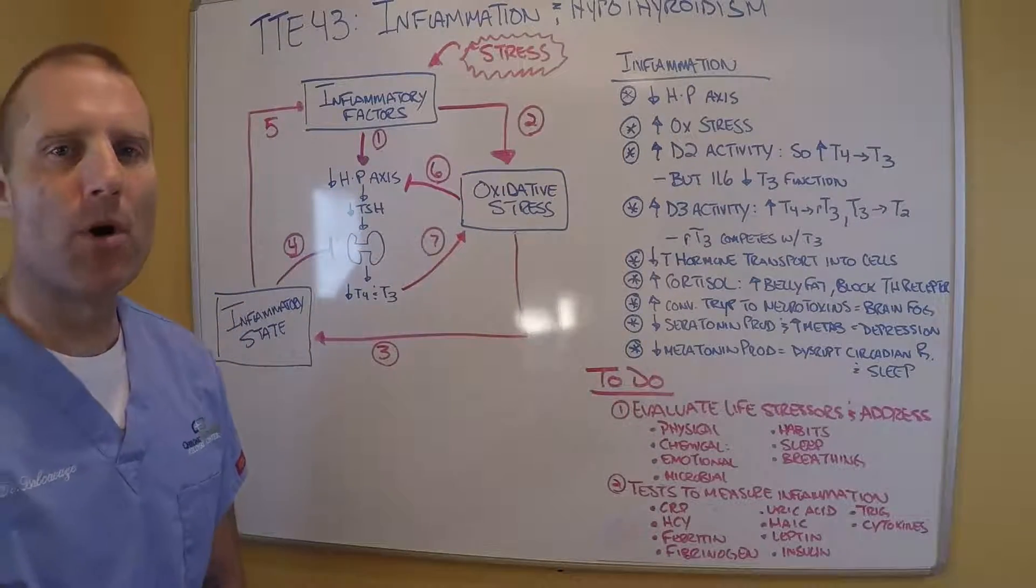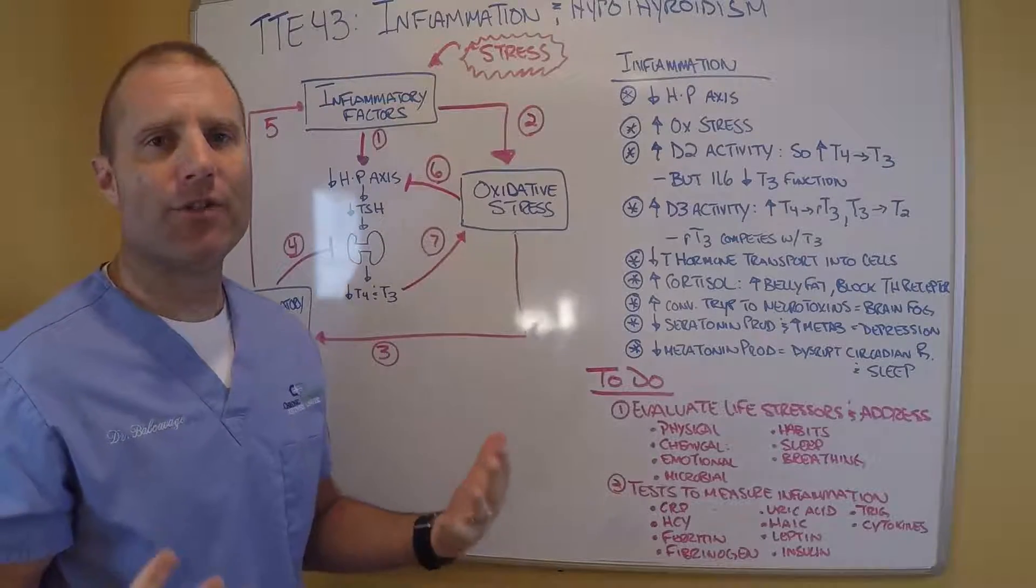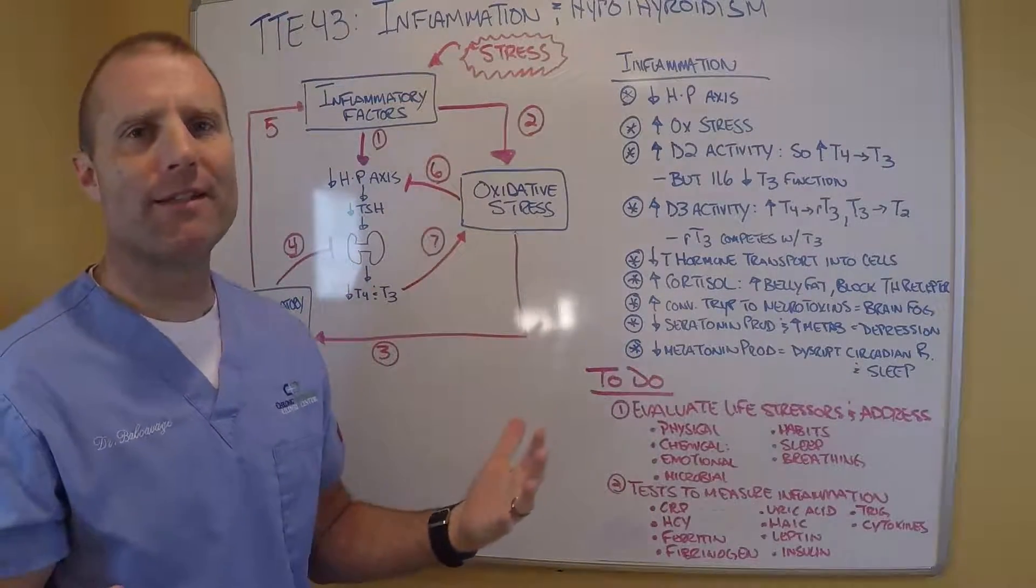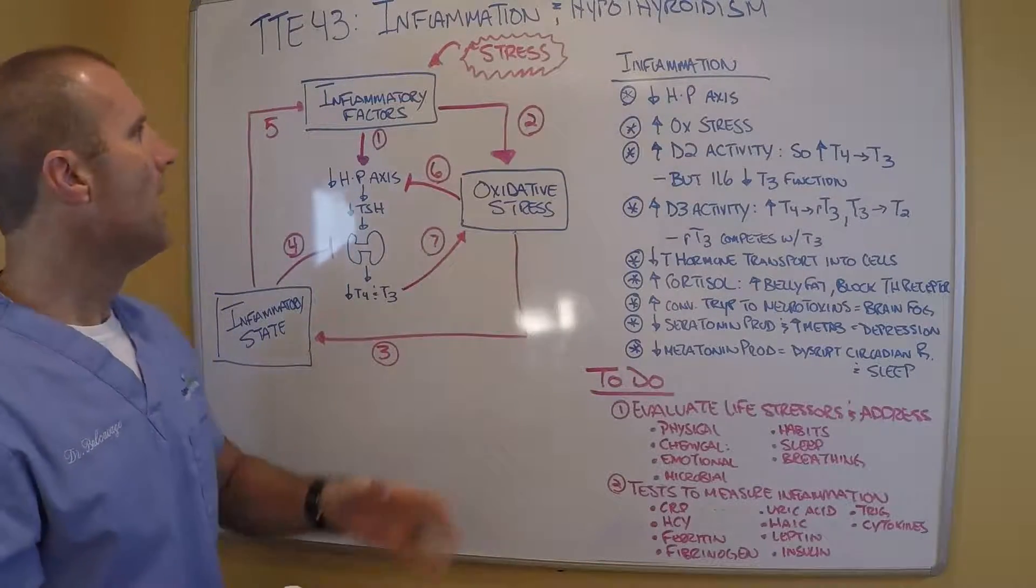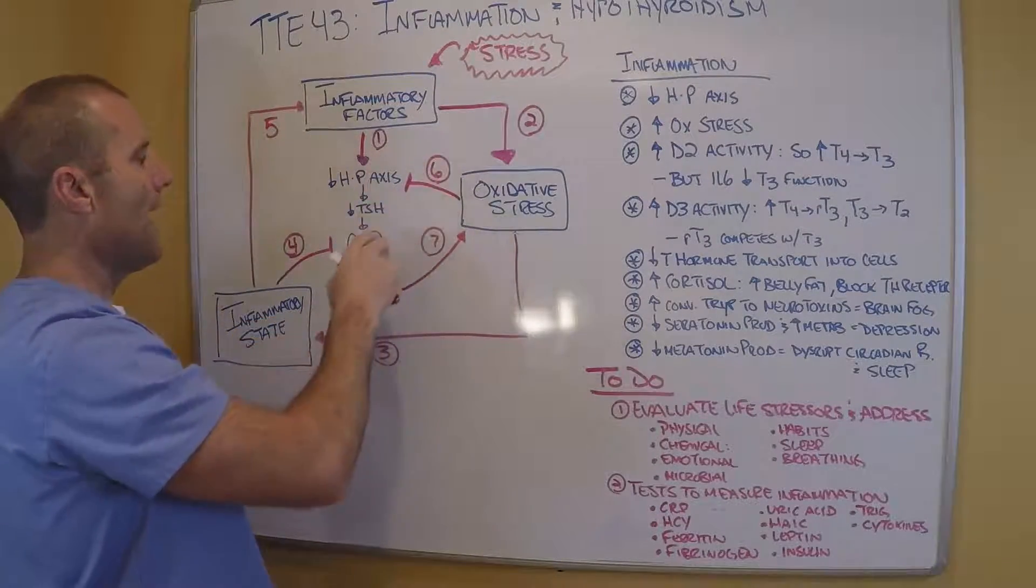So stress, whether it's physical, chemical, or emotional, more than the body can manage or tolerate, disrupts the balance in the body called homeostasis. We start to see an upregulation of inflammatory chemicals. And when we get upregulation of inflammatory chemicals, these inflammatory chemicals can actually suppress...